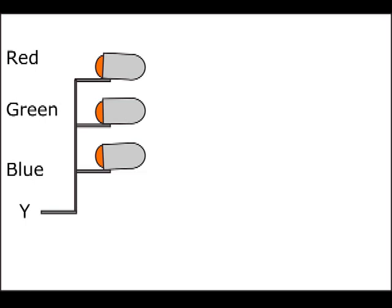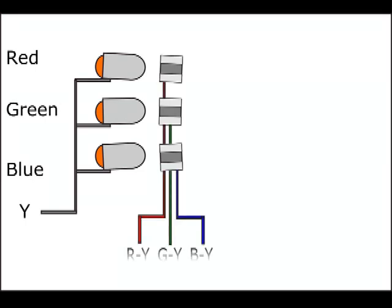Next to the cathode of each gun is a control grid, which can control that gun individually. The grids of the three guns are connected separately to each of the color difference signals.